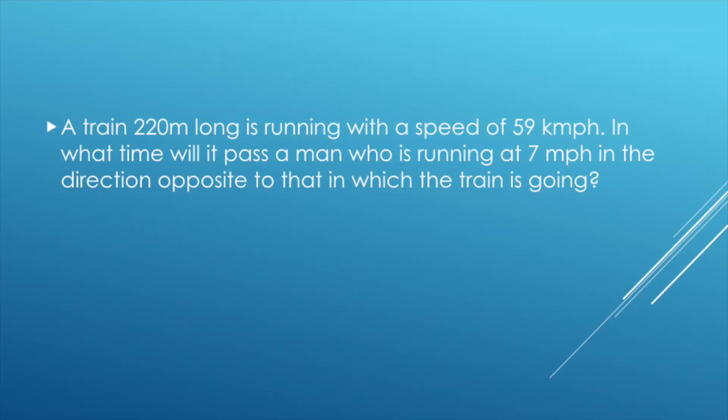A train 220 meters long is running with a speed of 59 kmph. In what time will it pass a man who is running at 7 kmph in the direction opposite to that in which the train is going?